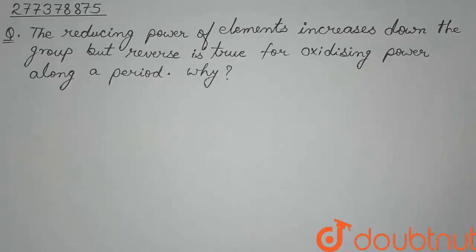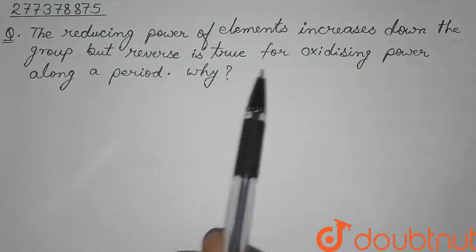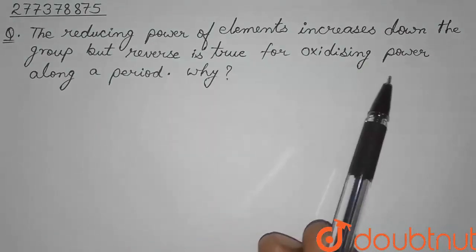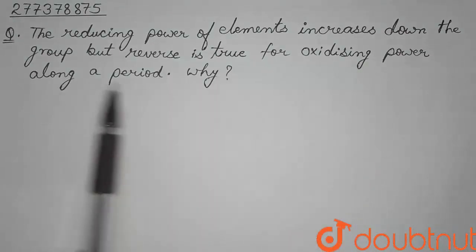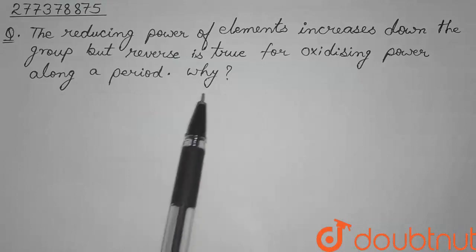Hello students. This question is: why does the reducing power of elements increase down the group, but the reverse is true for oxidizing power along a period?